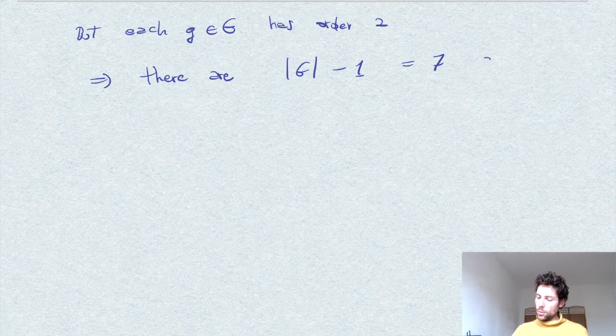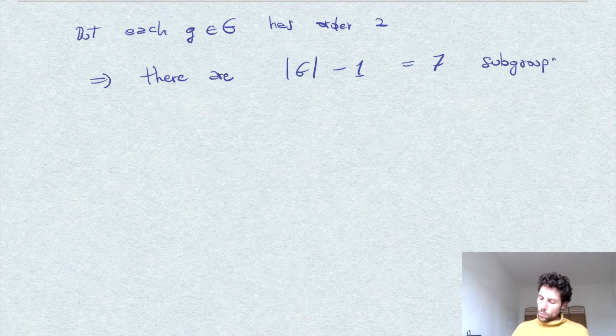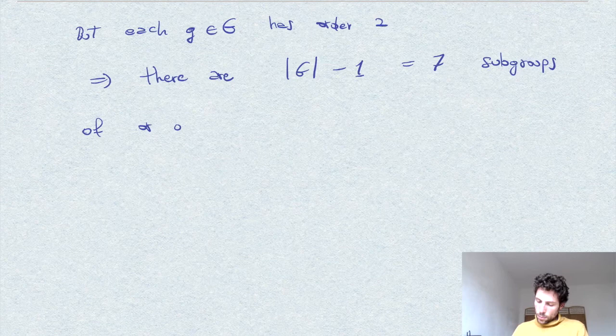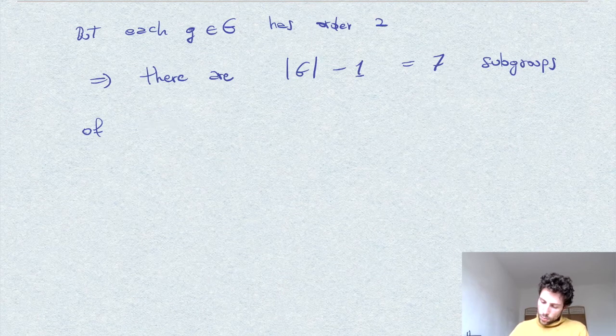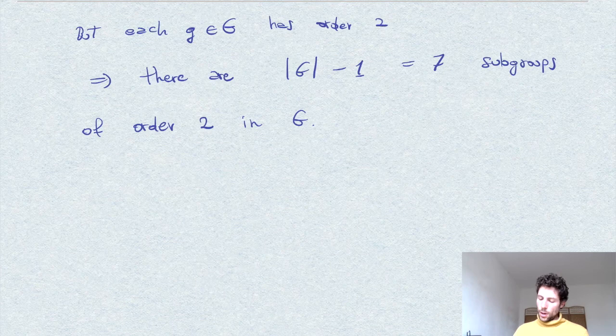Since we don't want to consider the group generated by the identity, which gives us seven subgroups of order 2.